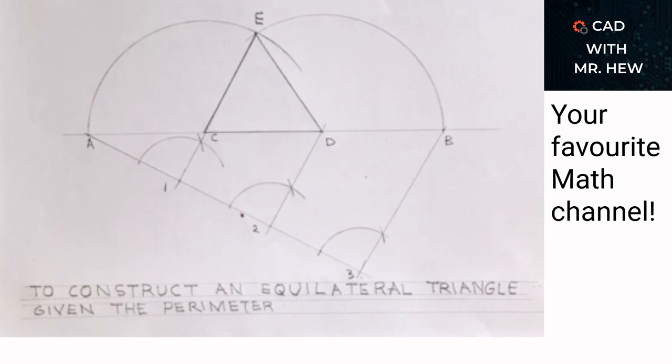For example, divide line A in the ratio 2, 3, 4.